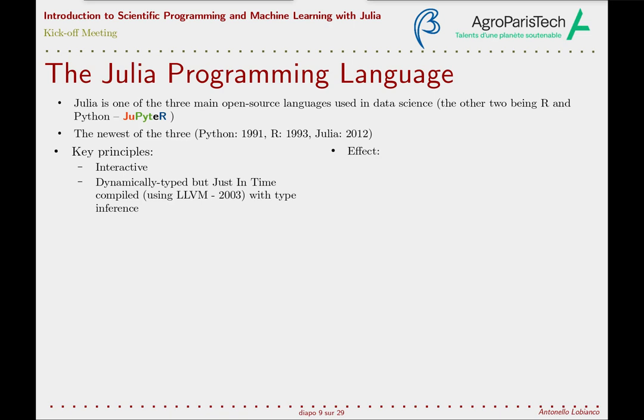It is a dynamically typed language where the same variable can be rebound to objects of different types during the program flow, and you don't need to explicitly declare the type. However, differently from interpreted languages, the code is compiled just-in-time — the first time execution is required, or even earlier with pre-compilation. If the compiler can infer the type of the object, it can reuse the compiled specialized version for successive calls.